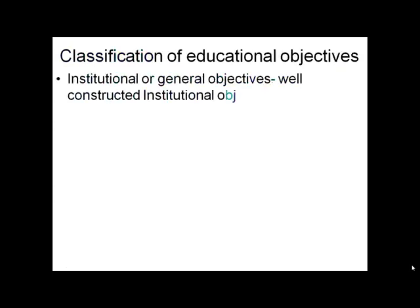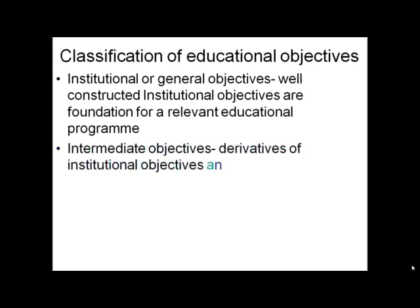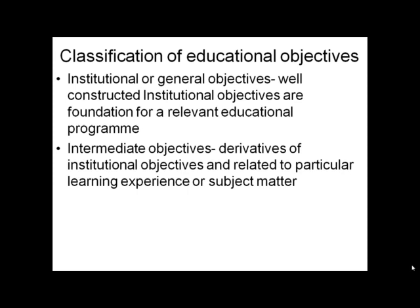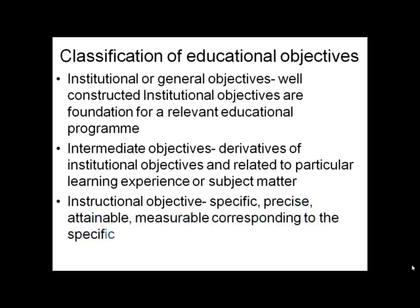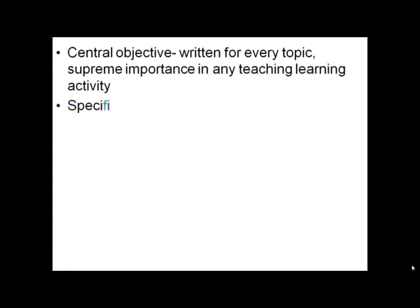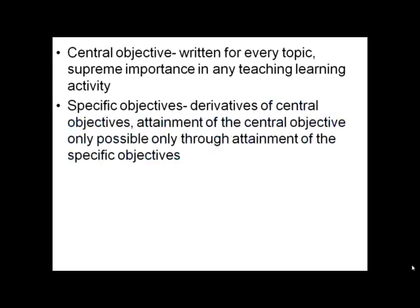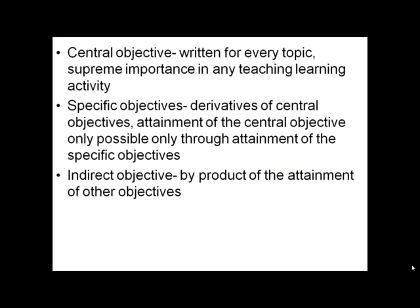Classification of educational objectives: first is institutional or general objective — well-constructed institutional objectives are the foundation for a relevant educational program. Second is intermediate objectives, which are derivatives of institutional objectives related to the particular learning experience of the subject matter. Third is instructional objectives — specific, precise, attainable, measurable, corresponding to specific teaching learning activity in the classroom. Central objectives are written for every topic of supreme importance. Specific objectives are derivatives of the central objective — attainment of the central objective is only possible through attainment of specific objectives. Indirect objectives are the byproduct of attainment of other objectives.